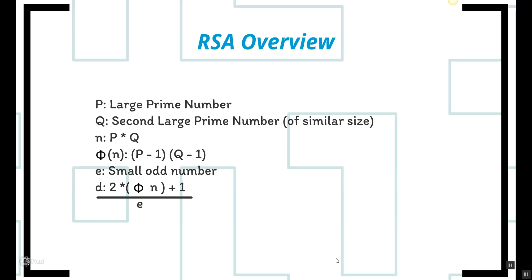It's an asymmetric encryption technique which allows two parties to exchange encrypted messages without ever having to have met each other or to share a key. This is done by a signer generating two large prime numbers, p and q, of similar size, and n — p multiplied by q — then taking the totient of that n, which is p minus 1 multiplied by q minus 1.